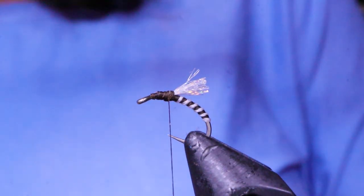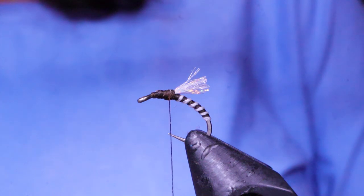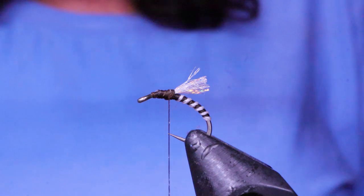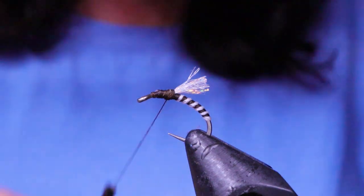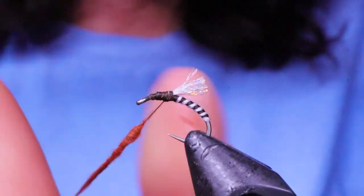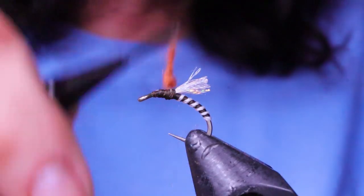Next take some of your super fine dubbing, dry fly dubbing. I'm using the Kapok by Semperfly. It's a natural dubbing that they used to use in life jackets. Floats forever. Builds a really nice, fairly easy to build a nice tight little noodle with it.